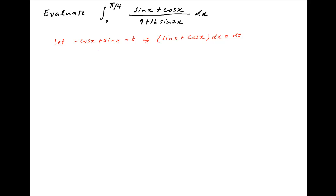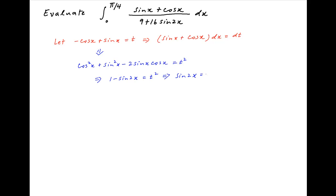Taking the square of minus cos x plus sin x equals t, the left hand side gives cos squared x plus sin squared x minus 2 sin x cos x, and the right hand side is t squared. This implies 1 minus 2 sin x cos x equals t squared, in other words sin 2x is equal to 1 minus t squared.